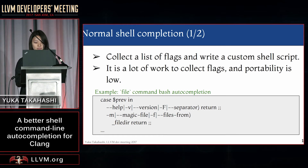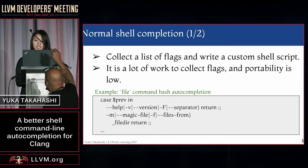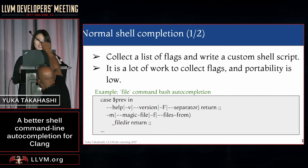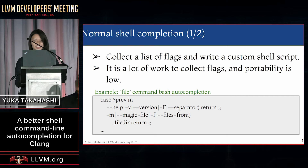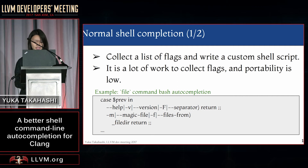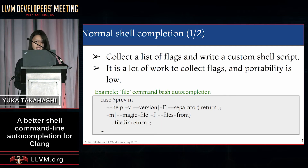Normally, this autocompletion is realized by someone's effort, collecting a list of flags and writing custom shell scripts. For Clang, this would mean a lot of work, as the Clang compiler has to ship with hundreds of flags that rapidly change between versions. So the portability of these autocompletions is low.